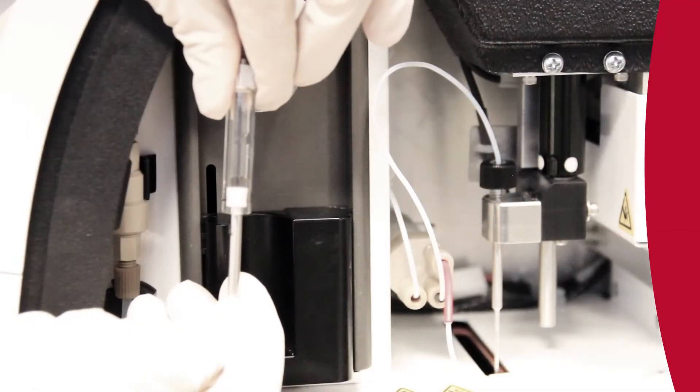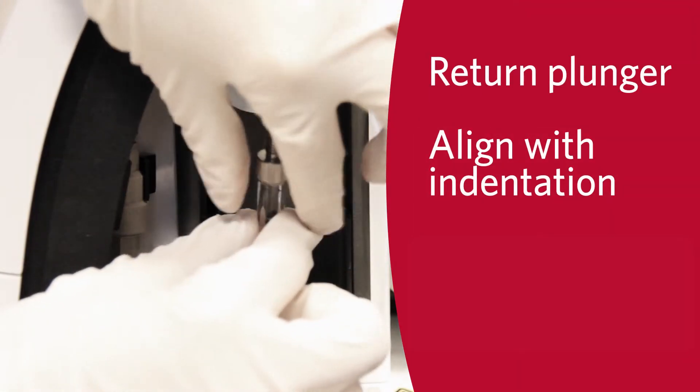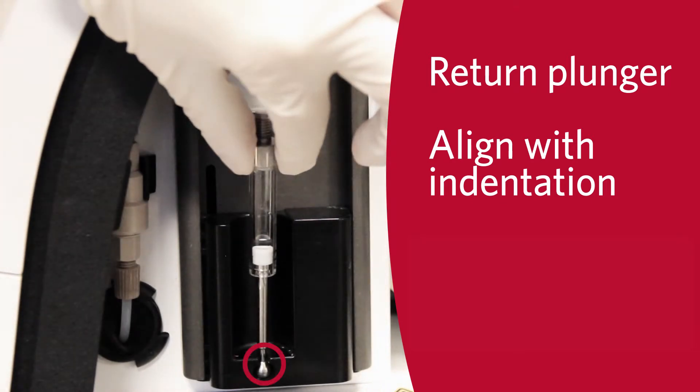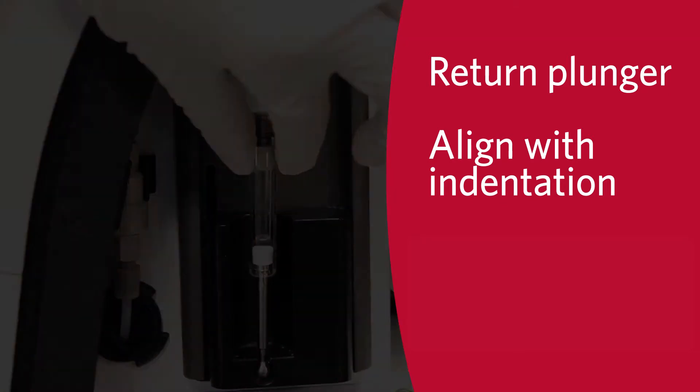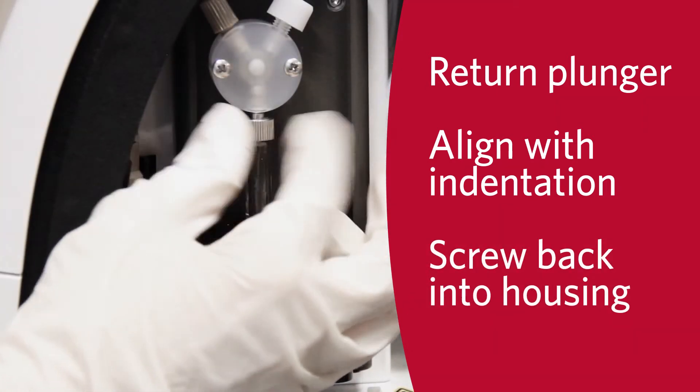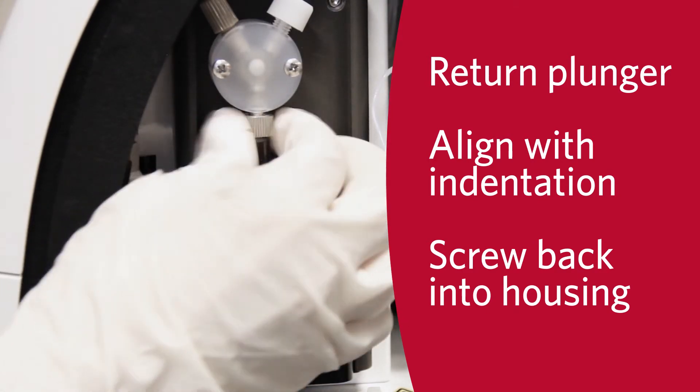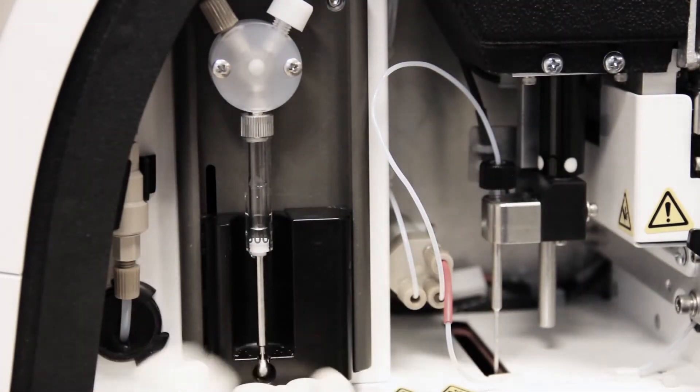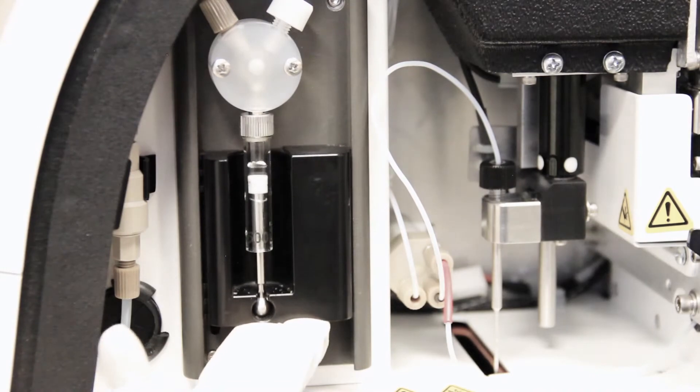Return the plunger to the syringe and align the bottom of the plunger with the indentation in the plunger guide. Screw the top of the syringe back into its housing and tighten. Return the plunger guide to its original position.